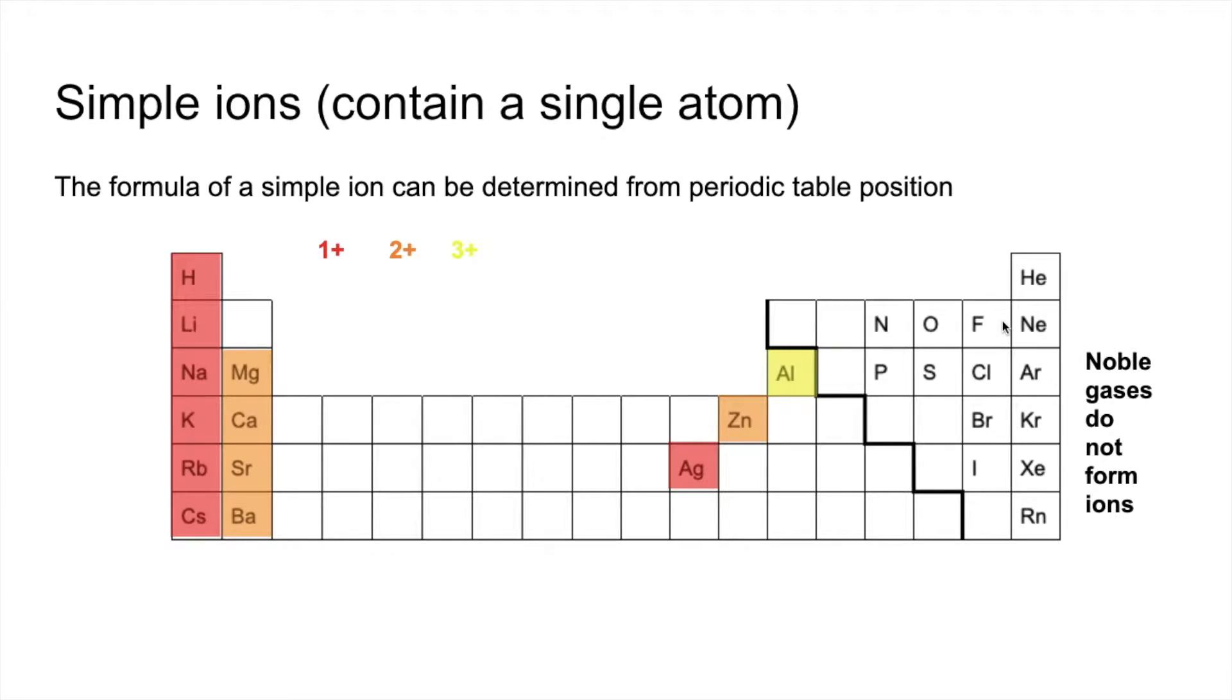Group seven, they are one electron short of a full outer shell. So these form one minus ions. They gain an electron. These two here, these two group six elements, will form two minus ions because they're going to gain two electrons. And these two here are going to form three minus ions.